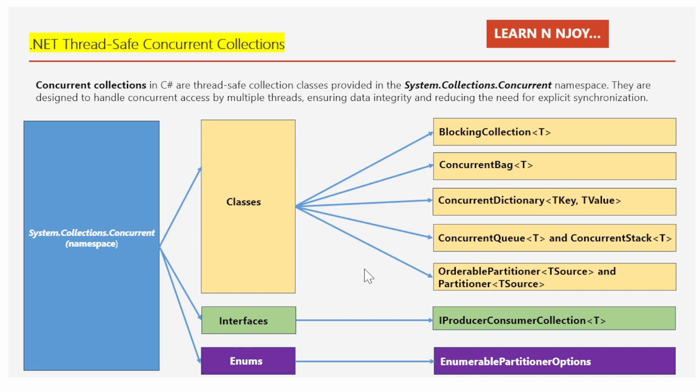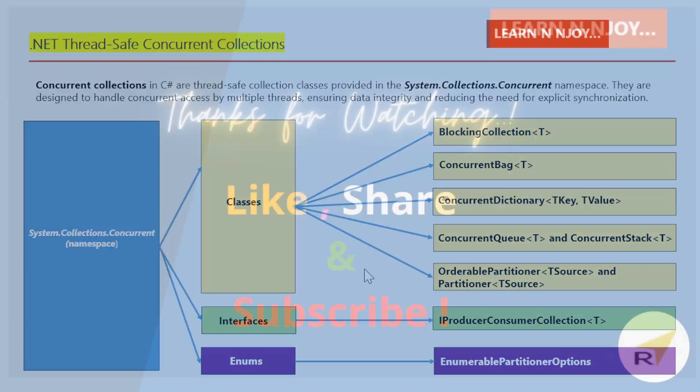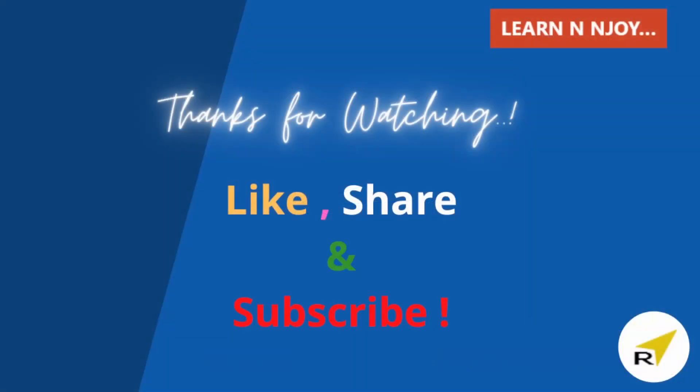So that brings me to the end of my session today. To sum up, the System.Collections.Concurrent namespace is all about keeping things organized and safe when multiple parts of your application need to access the same data at the same time. It helps prevent problems and ensures everything runs smoothly. In upcoming videos, I'll delve into these concepts in much more detail, so stay tuned. That's all for this video, guys. If you liked it, hit the like button, share it with your friends and colleagues, and subscribe to my channel if you haven't already. Thanks for watching, see you in the next video.